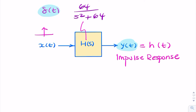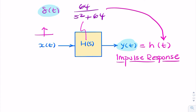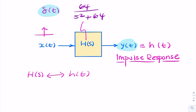The easiest way to find that is to find the inverse Laplace transform of the transfer function H(s). So we need to find H(s) in the time domain — we need to convert that to the time domain. We need to take H(s) back to the time domain using the inverse Laplace transform.